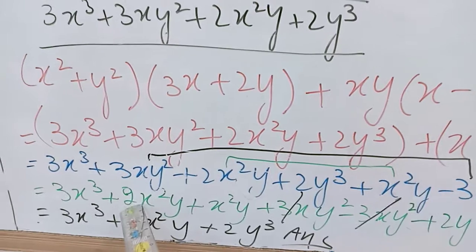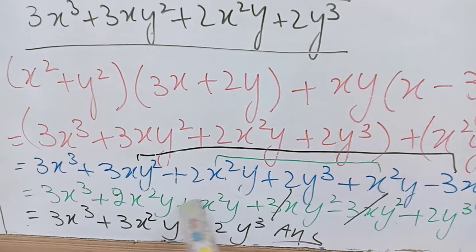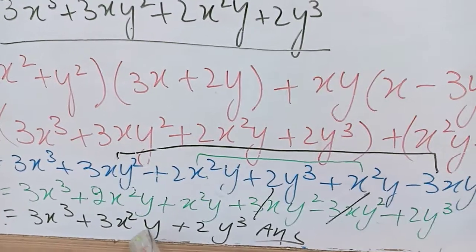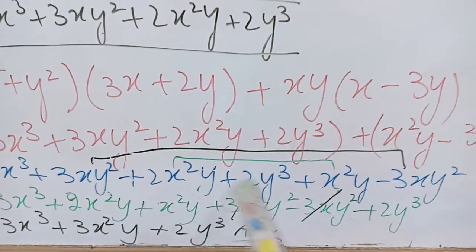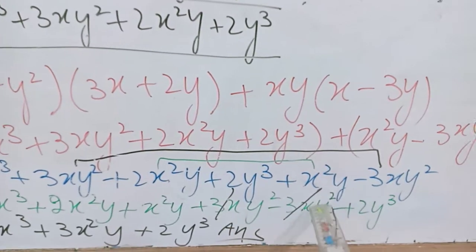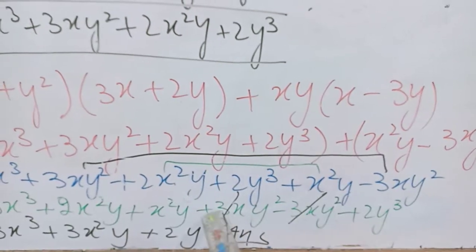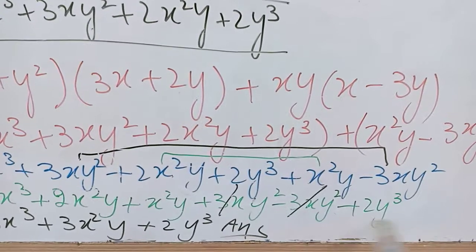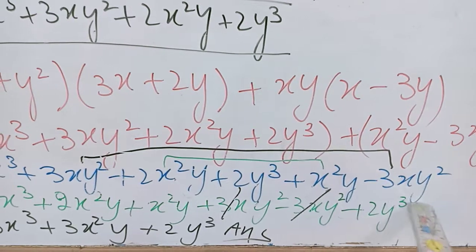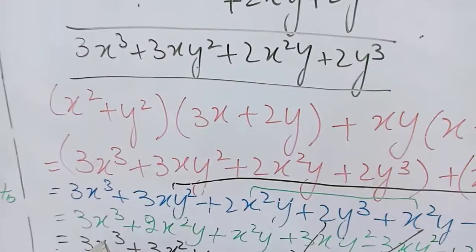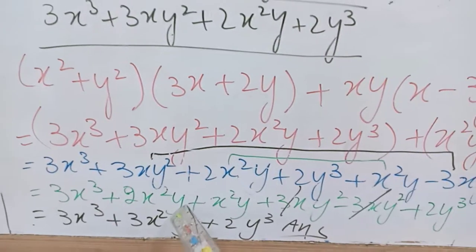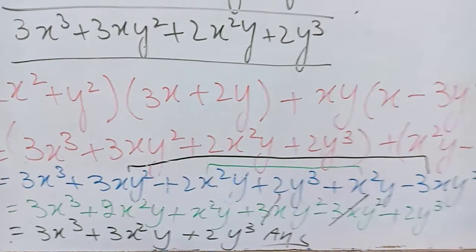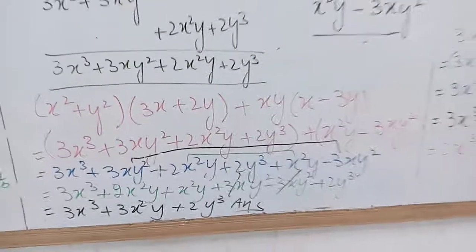3x²y plus x²y, 2 and 1, both are same but signs are changed so plus minus, minus 3 minus 3 is equal to 0 so this cancels each other. So leftover is this. So our answer is 3x³ + 3x²y + 2y³. This is the answer of this question.